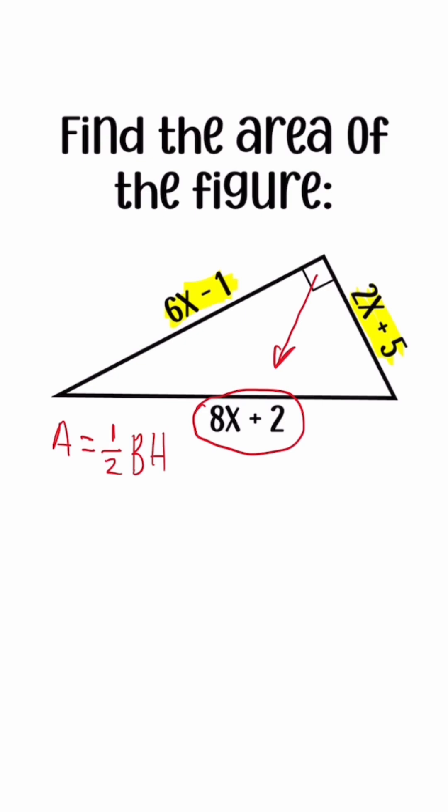So when we try to simplify this, we have area equals half times 6x minus 1 times 2x plus 5. For this, we're going to have to FOIL. So area equals half, and then once I FOIL, we're going to have 12x squared plus 30x minus 2x minus 5.